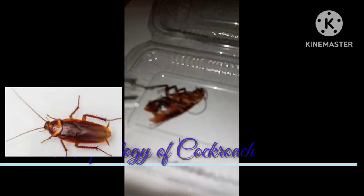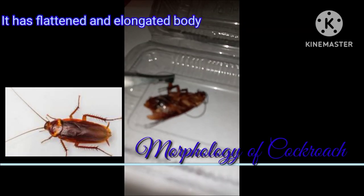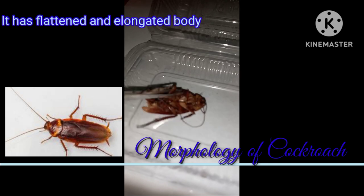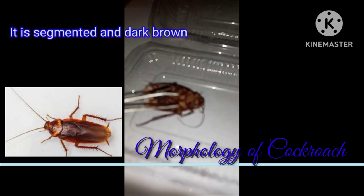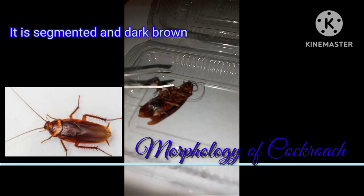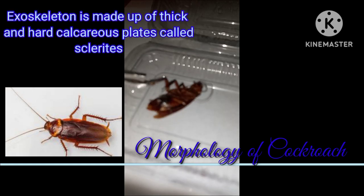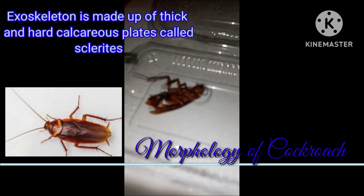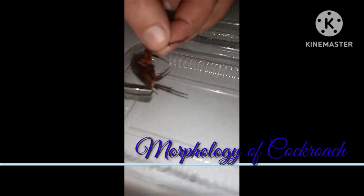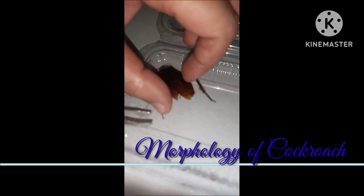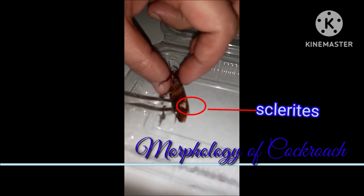As you can see, it has a flattened and elongated body. Its body is segmented and dark brown in color. Its exoskeleton is made of thick and hard calcareous plates called sclerites.